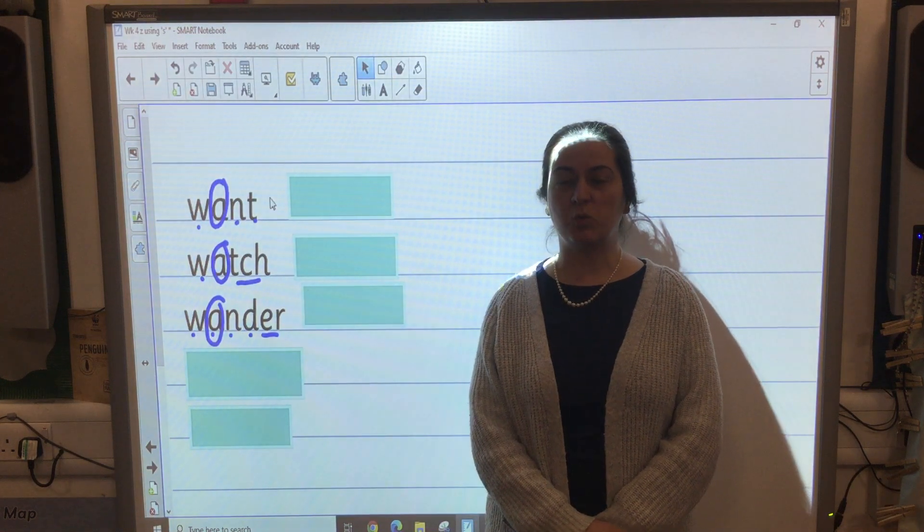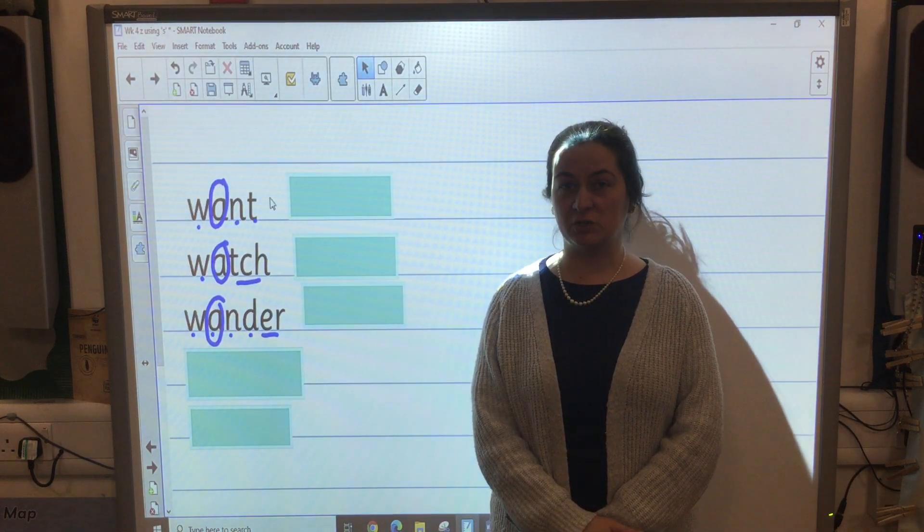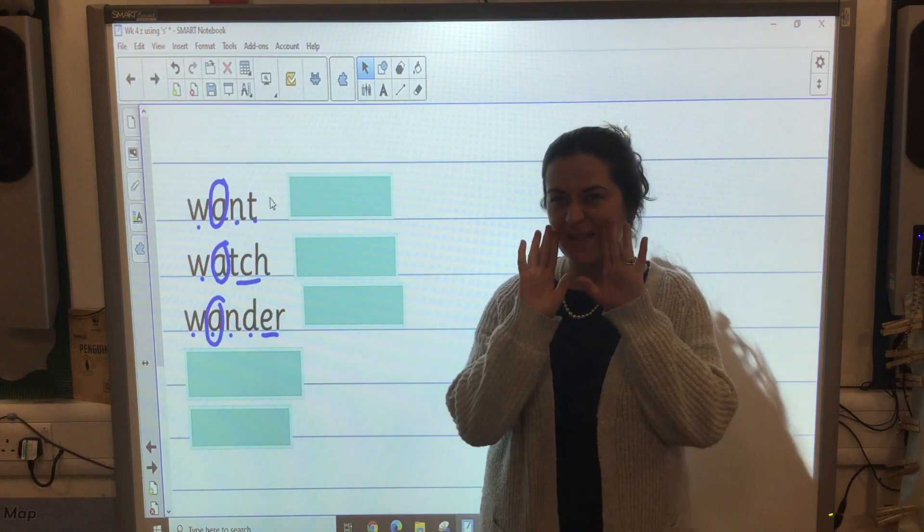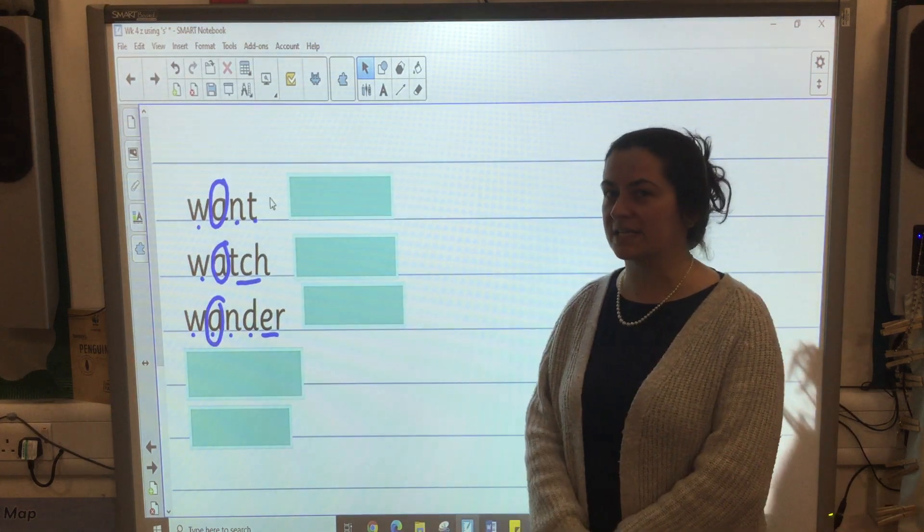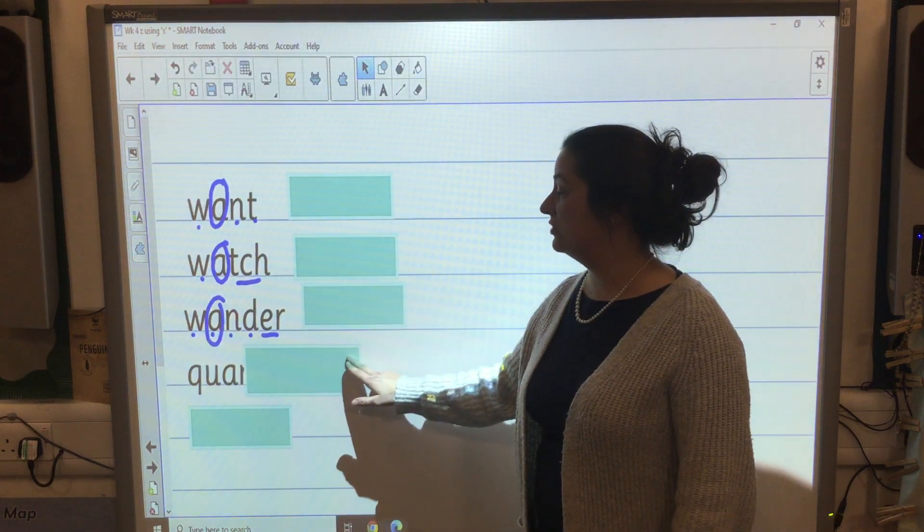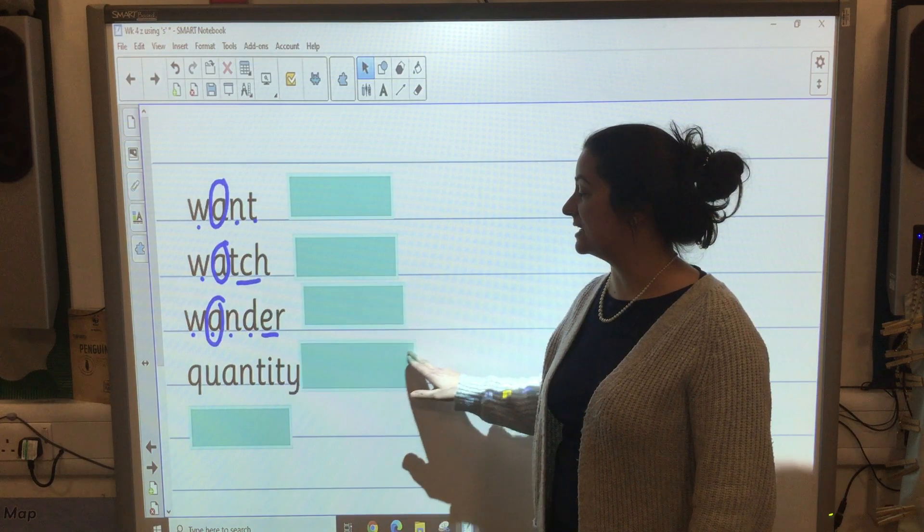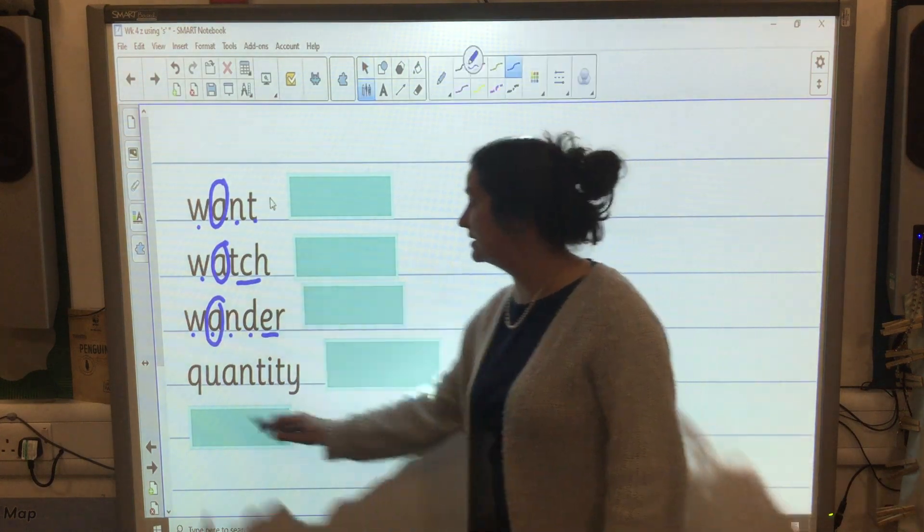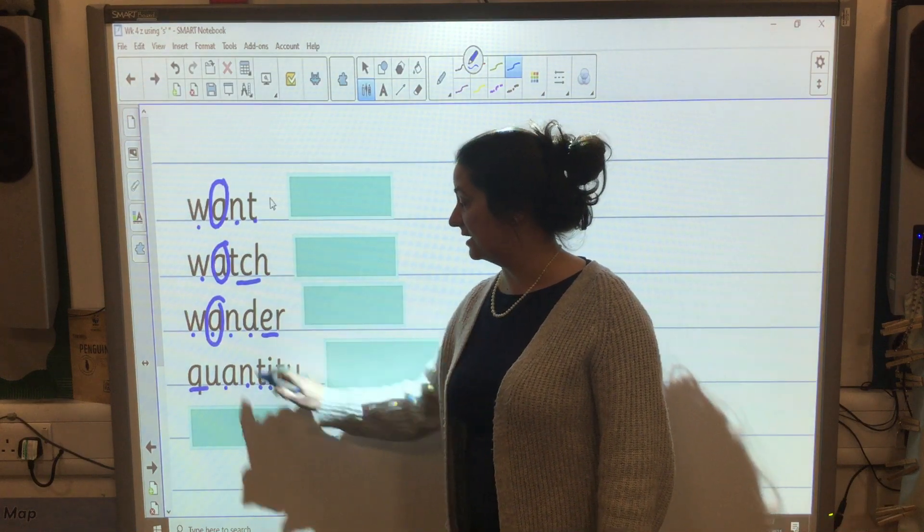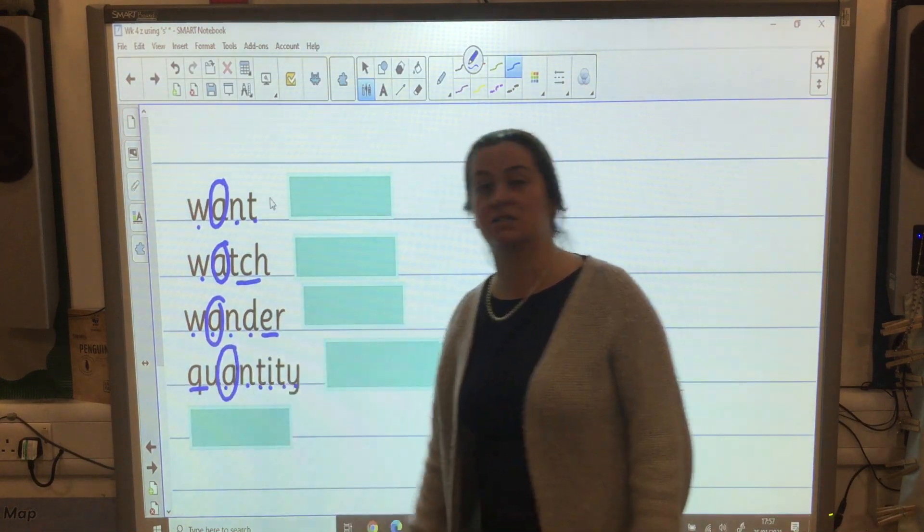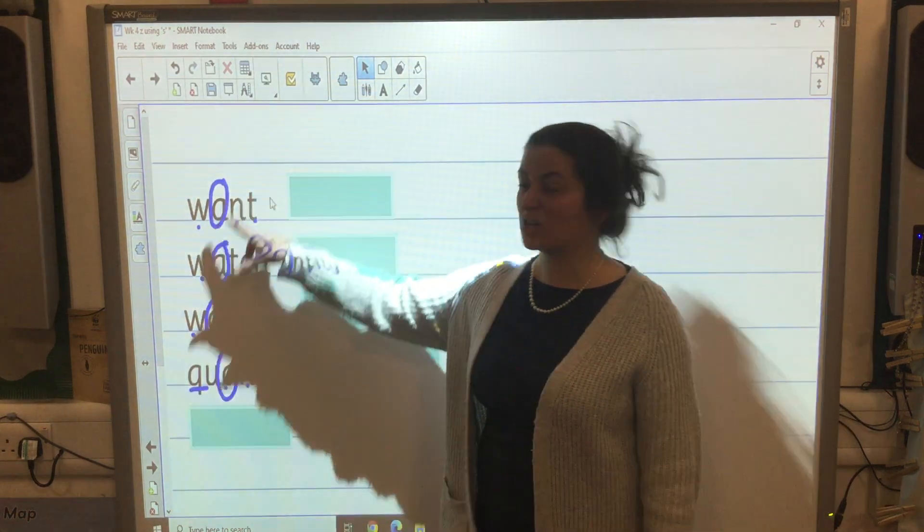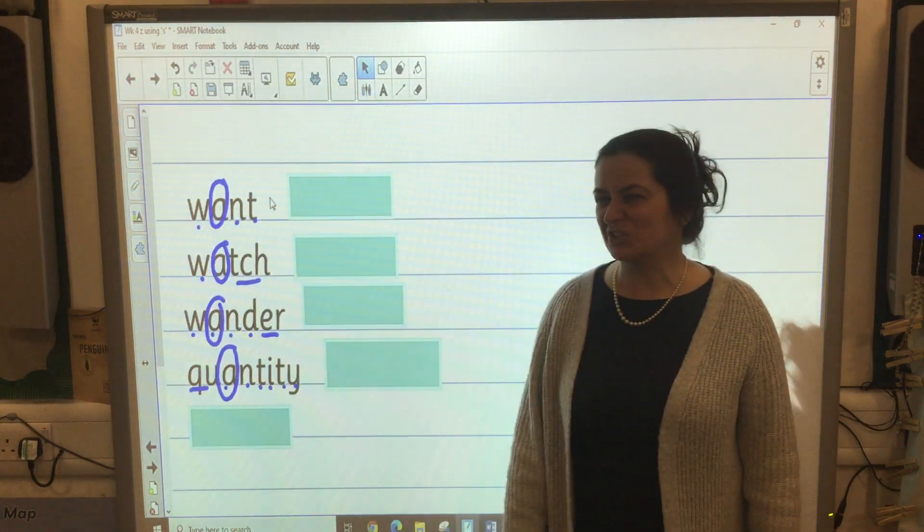Your next word is quantity. Have a look in your sweet box and find out the quantity of sweets in there. How many are there? Quantity. Let's check and change. Q-u-a-n-t-i-t-y. Let's check with our sound buttons. And there's the tricky part of our word. Except now you've practiced so many times it's probably not as tricky anymore.